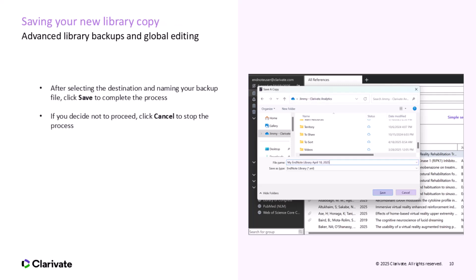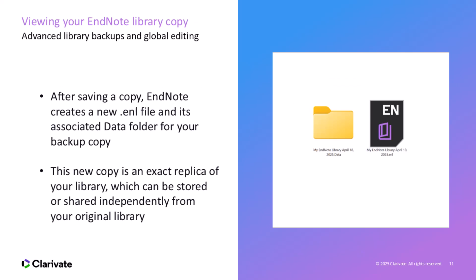Once you've chosen the destination folder and named your backup file, click Save to complete the Save a Copy process. This will securely create your backup in the location you've selected. If you change your mind, simply click Cancel to close the Save a Copy window and leave your library unchanged. Clicking Save creates an exact backup of your library that can be safely stored or shared. After completing the Save a Copy process, EndNote creates a new .enl file and an associated data folder containing the same references and attachments as your original library, but it's now an independent file that can be stored separately or shared without affecting the original.